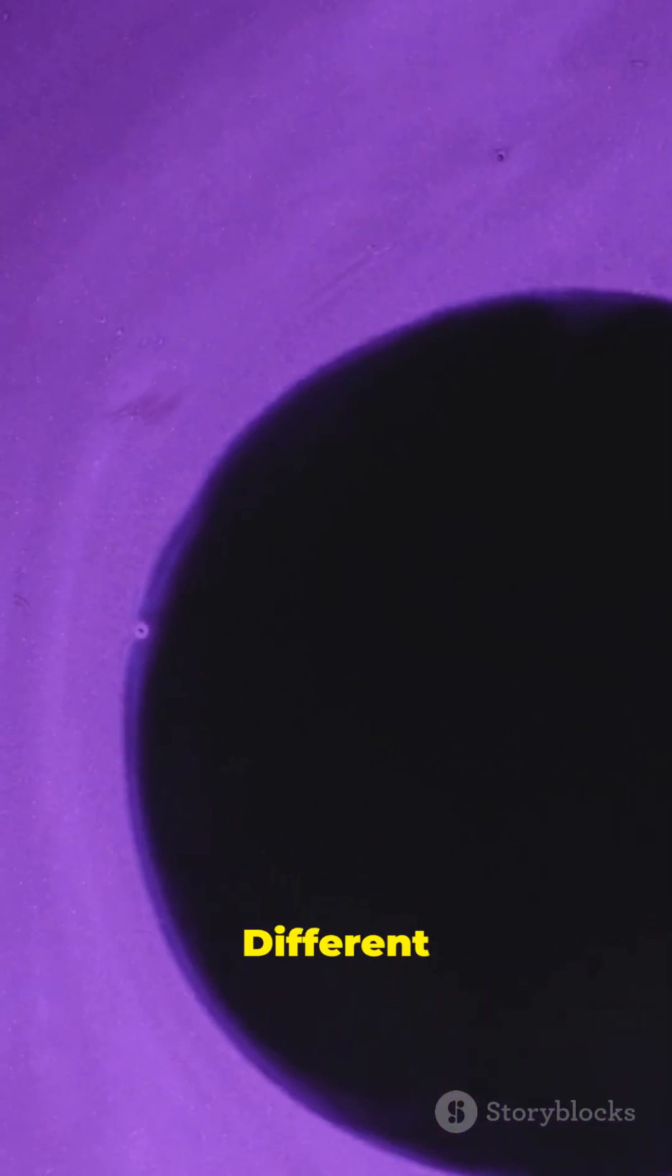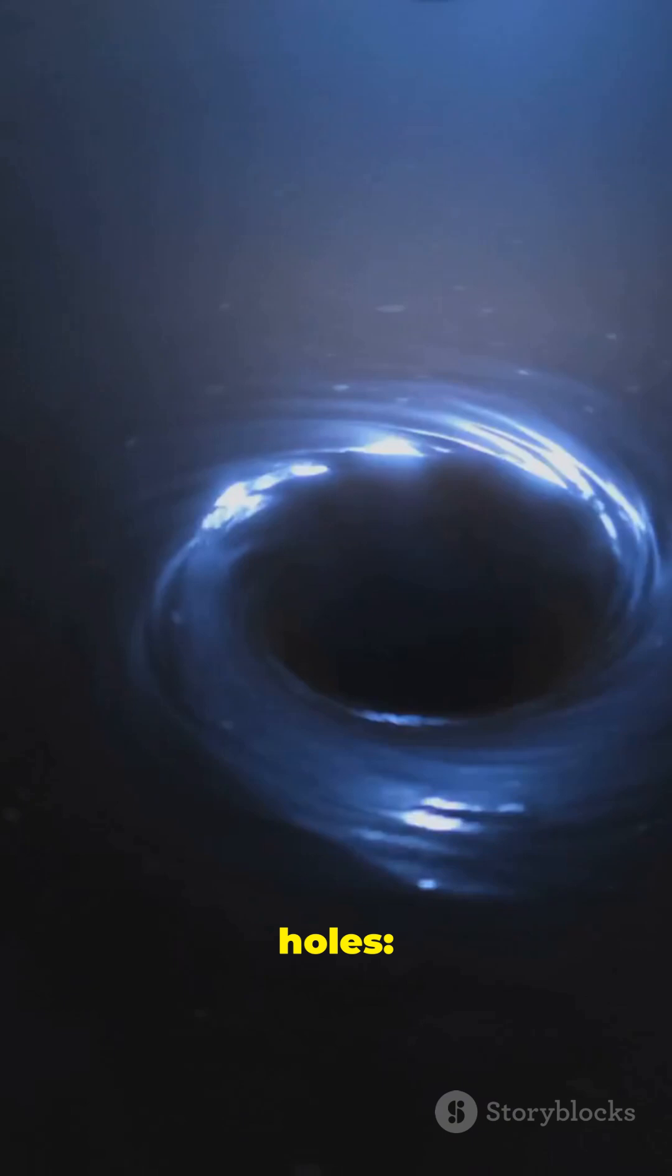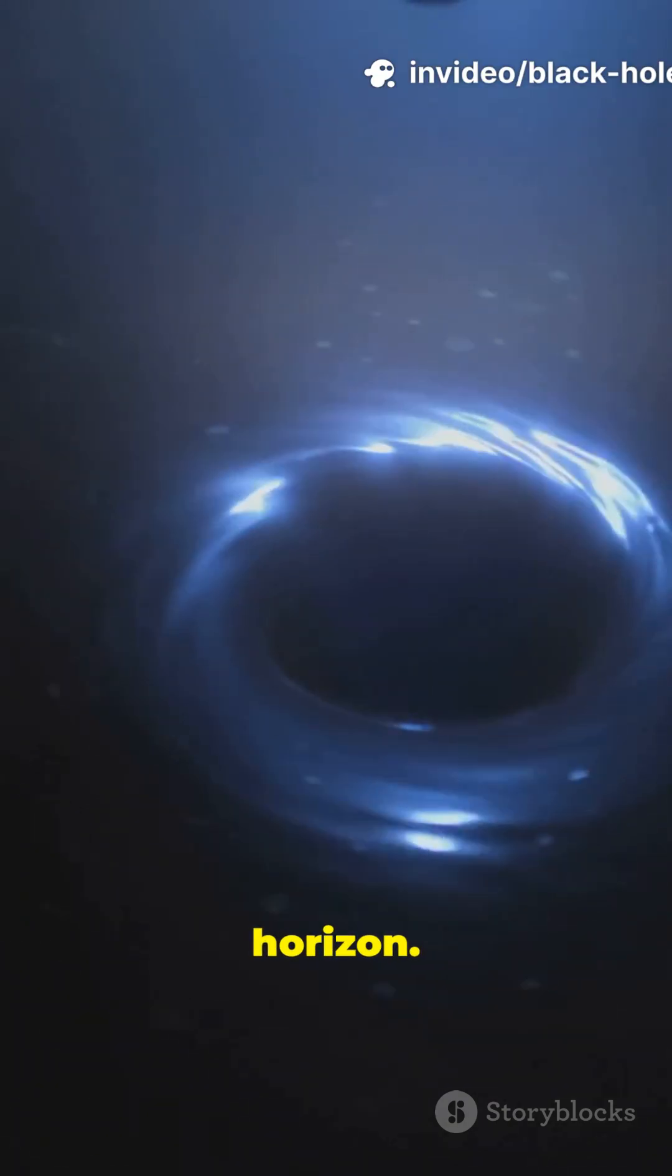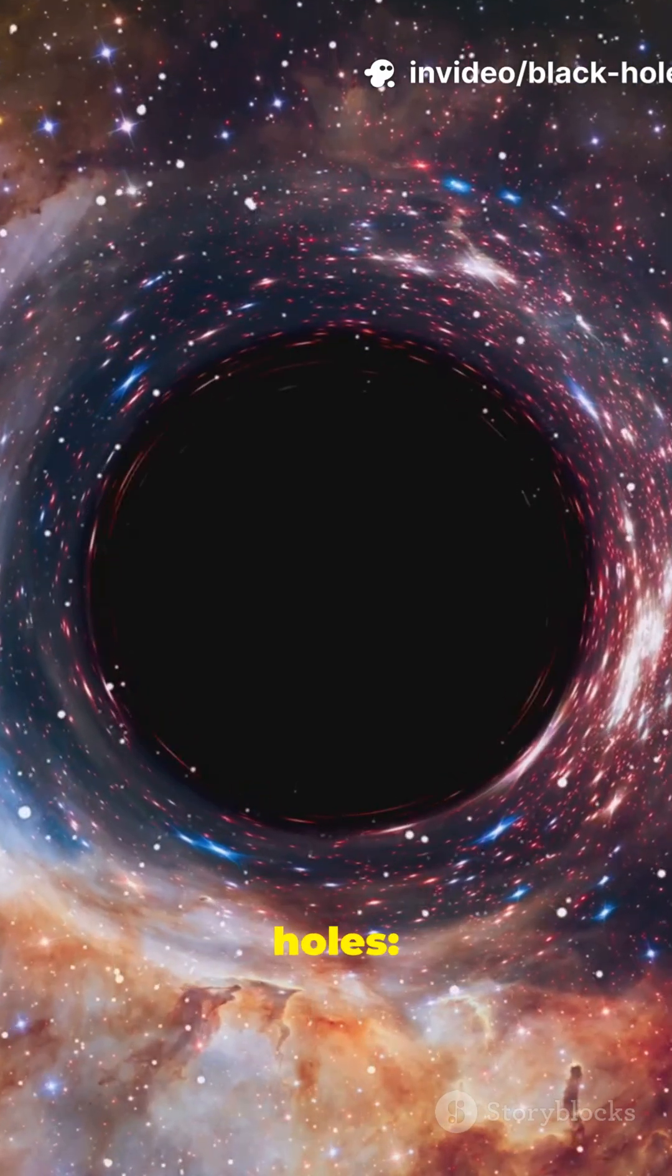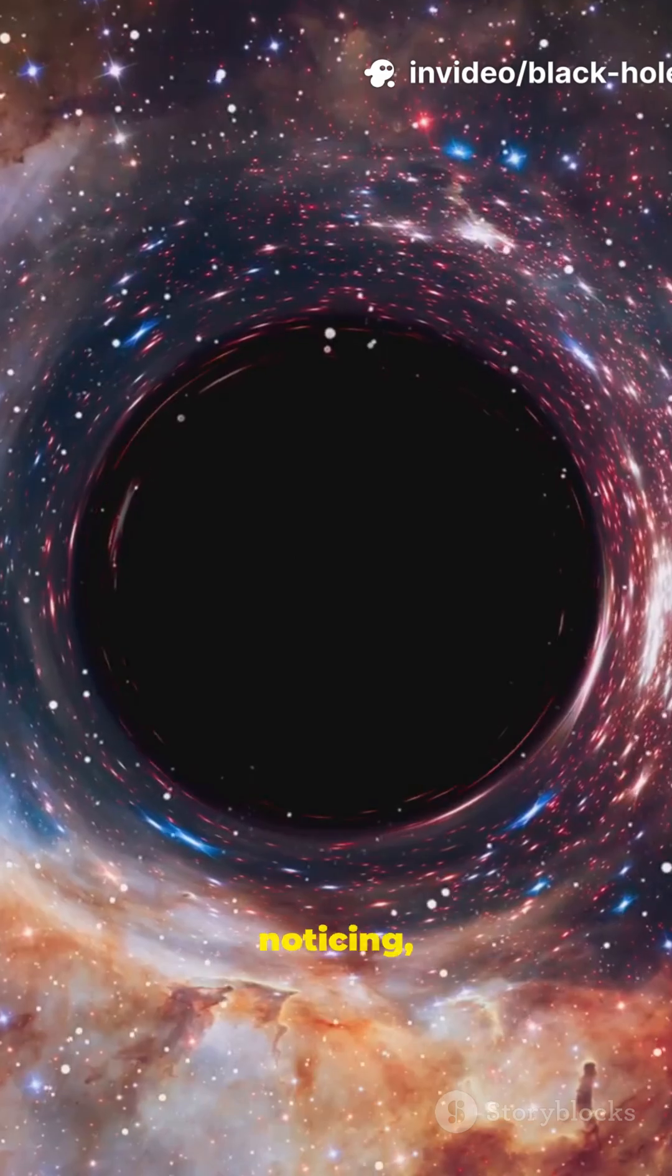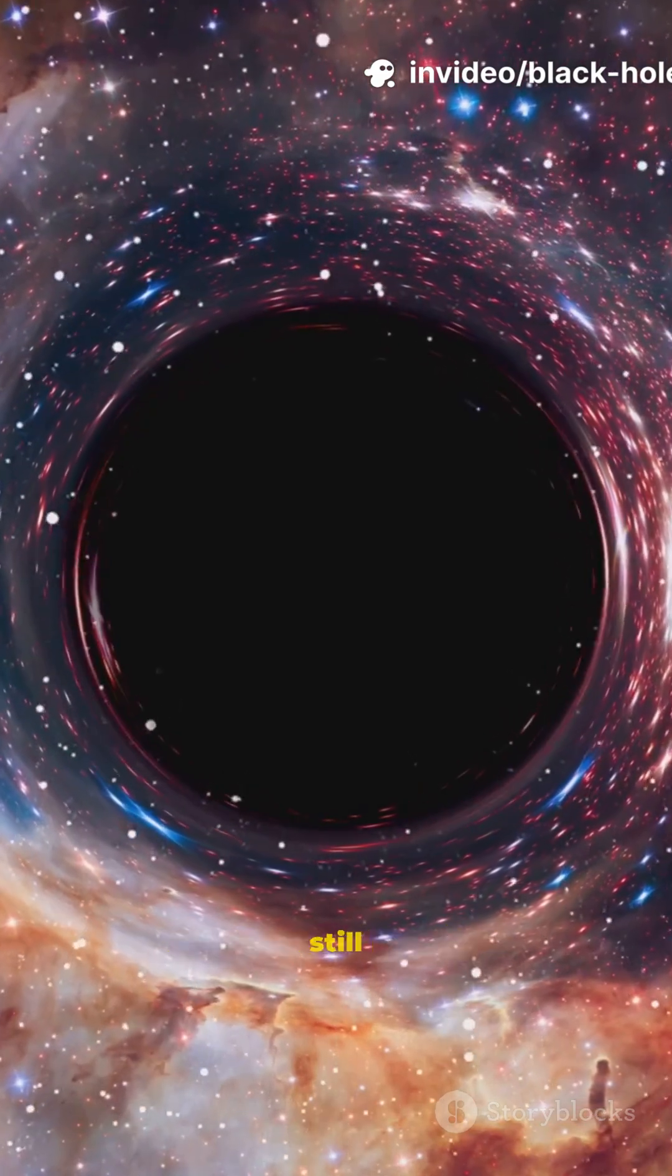Different black holes, different fates. Small black holes: spaghettification happens before reaching the event horizon. Supermassive black holes: you might cross the horizon without noticing, but eventually spaghettification still occurs inside.